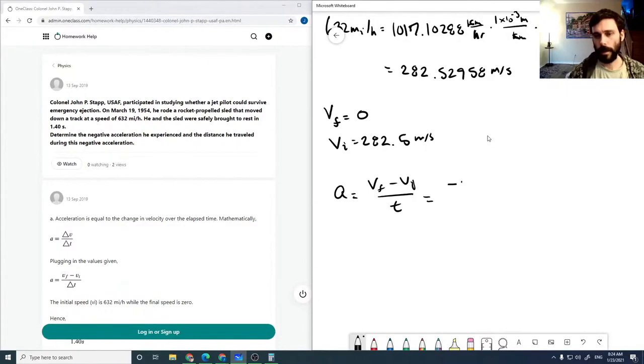This equals minus 282.5 meters per second over 1.4 seconds, which is minus 201.806 meters per second squared.